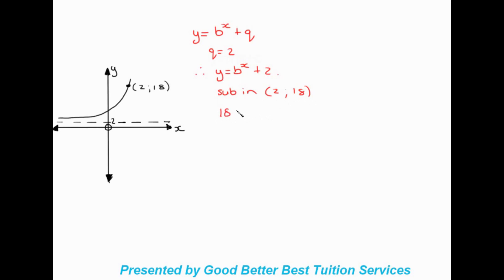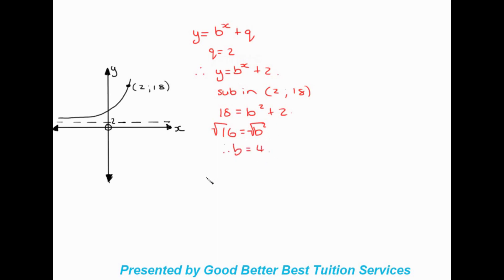Substituting in: 18 equals b to the power of 2 plus 2. Taking the 2 over gives us 16 equals b squared. To get b by itself we square root both sides, giving b equals 4. Our final equation is y equals 4 to the power of x plus 2.